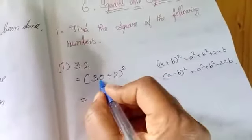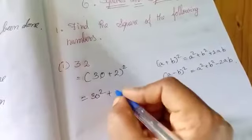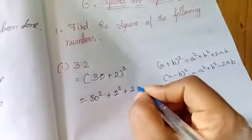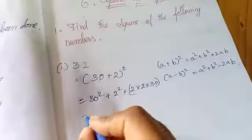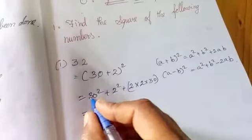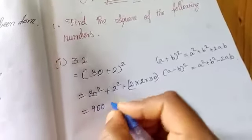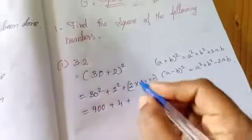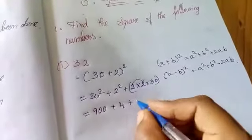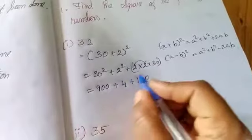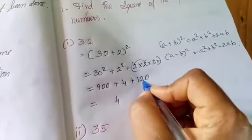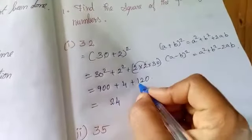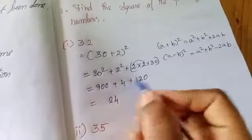We write 32 as (30 + 2)². So we have 30 squared plus 2 squared plus 2 multiplied by 30 multiplied by 2. Now, 30 squared is 900, 2 squared is 4, and 2 times 30 times 2 is 120. Adding these gives us the answer.